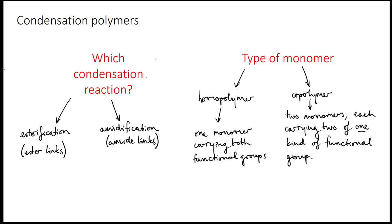Can you see a way that it would be possible to make a random copolymer with condensation polymerisation?